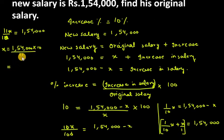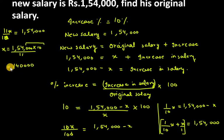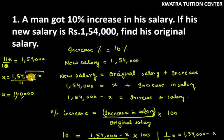When you cancel 154 by 11, you will get 14. And we have 4 zeros here, so we write 4 zeros. This gives us 140,000. That means his original salary was 140,000. And when he got a 10% increase, it becomes 154,000. So, this is the answer for question number 1.